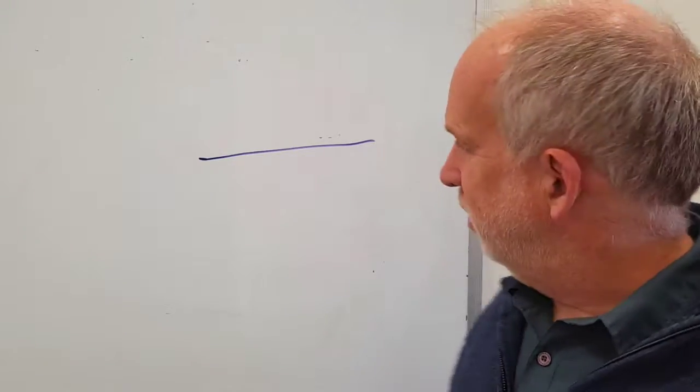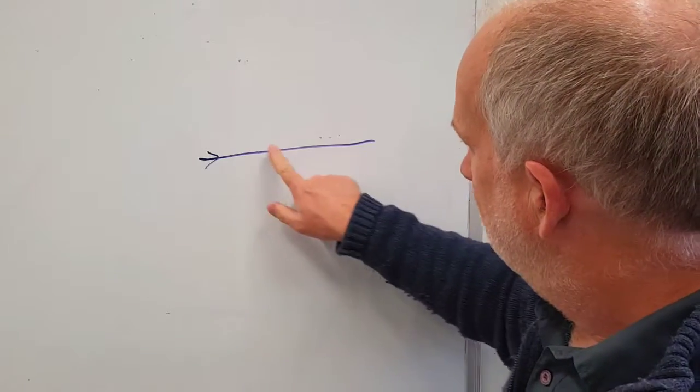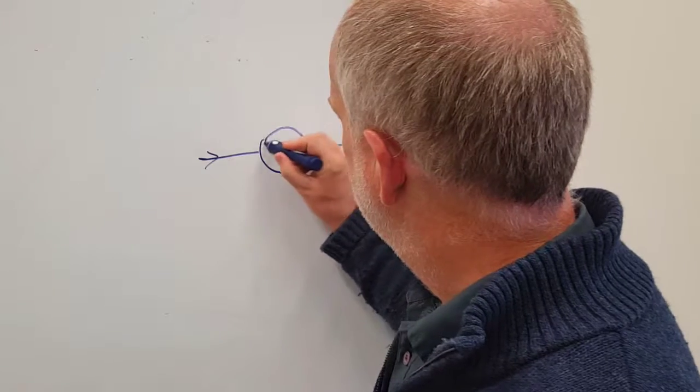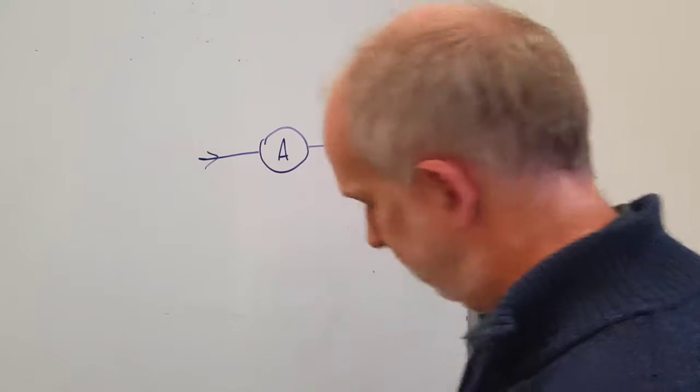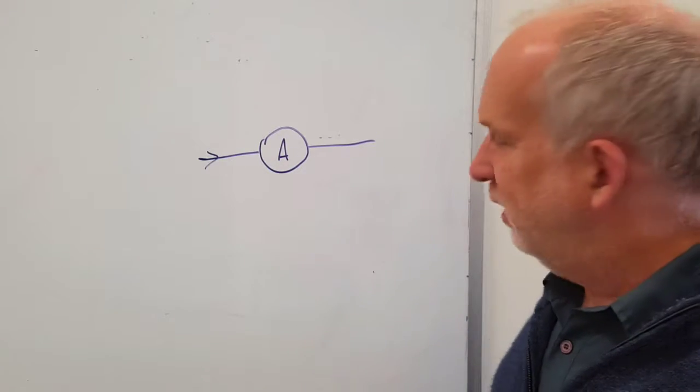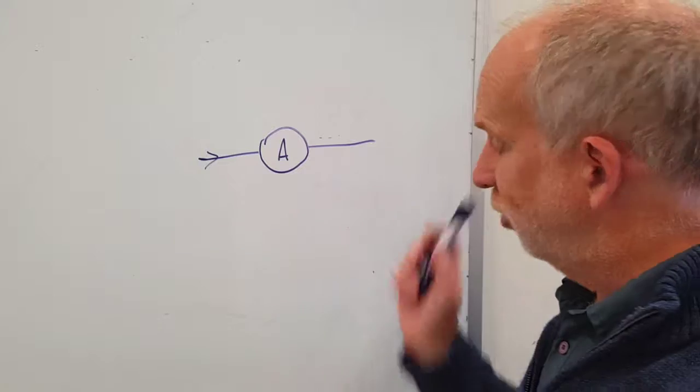The way you measure a current, so you have some current flowing down this wire, you have to break the wire and insert an ammeter, which is written as a circle with the letter A inside it. Now an ideal ammeter behaves just like the wire you've replaced, so it's a perfect conductor - current just goes straight through.